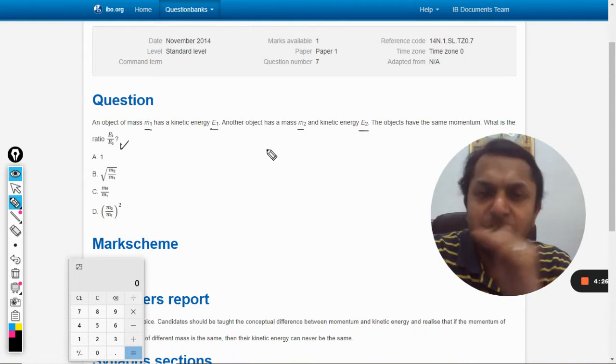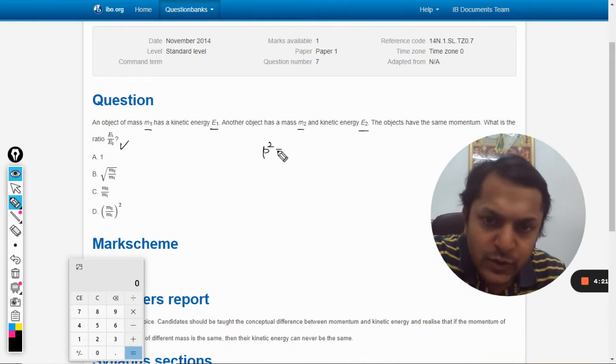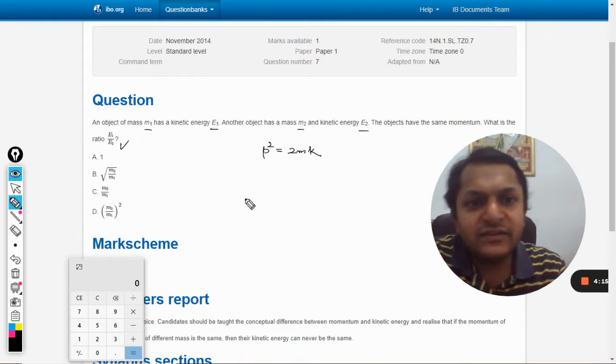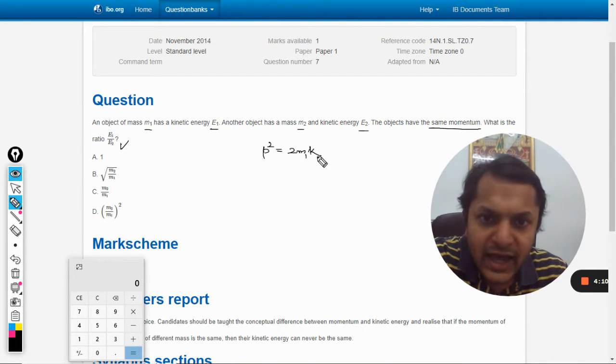There is a formula that relates momentum with kinetic energy, and that formula is p² = 2mk. We will use this formula. Now it is given that the momentum is the same for both bodies.